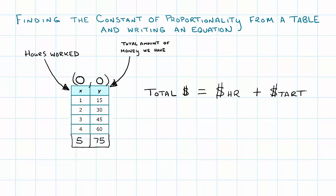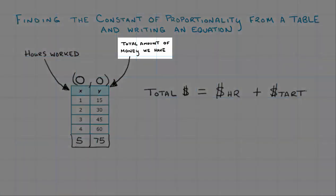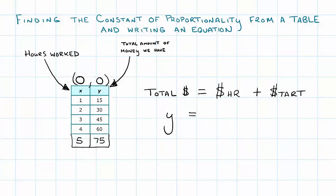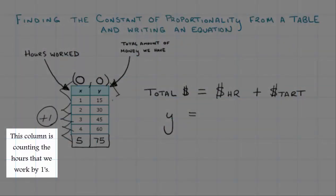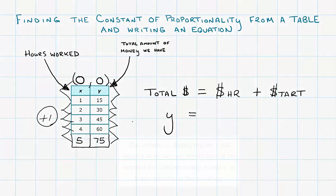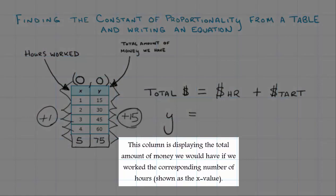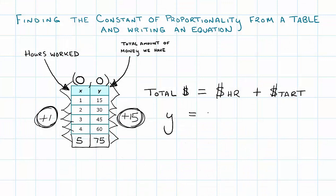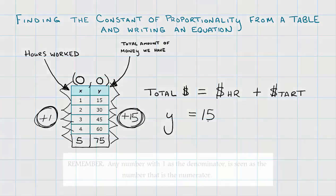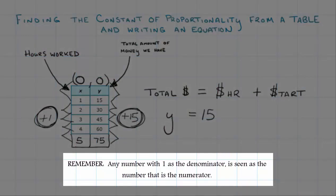Our total amount of money is represented by the letter y. The amount of money that we make per hour is represented by how much we are increasing by for every hour that we work. It's easy when our x values are counting by ones because 0 to 1, 1 to 2, 2 to 3, 3 to 4, 4 to 5, it just keeps increasing by one hour. That tells us from 0 to 15, 15 to 30, 30 to 45, 45 to 60, 60 to 75, we're making $15 for every one hour. The way that we write that is 15 over 1, or just the number 15. Any number with 1 as the denominator is just the numerator. So we have $15 per hour, and x is the amount of hours.